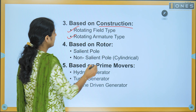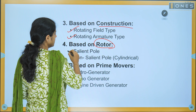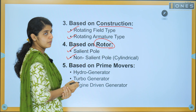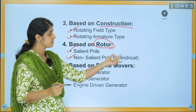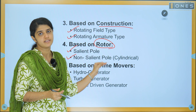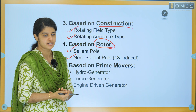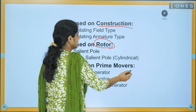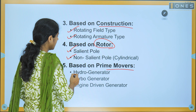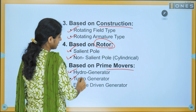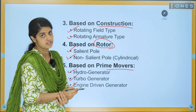Then, based on rotor: salient pole and non-salient pole — it is cylindrical pole construction. Then in prime movers: hydro generator, turbo generator, and engine-driven generator.